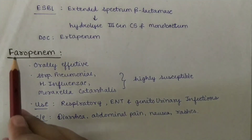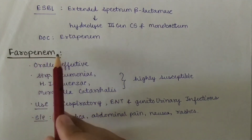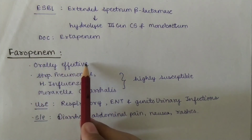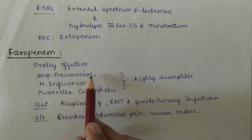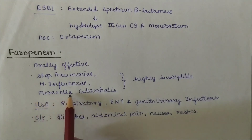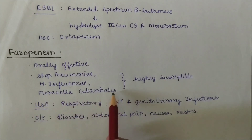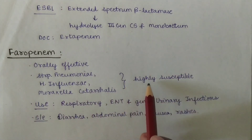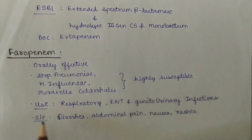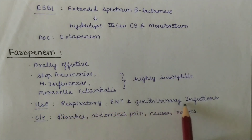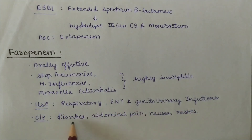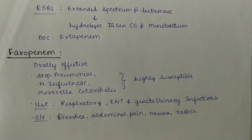Last, we will discuss Faropenem. It is orally effective. Streptococcus pneumoniae, H. influenzae, and Moraxella catarrhalis are highly susceptible to Faropenem. Uses: respiratory, ENT, and genitourinary tract infections. Side effects: diarrhea, abdominal pain, nausea, and rashes.